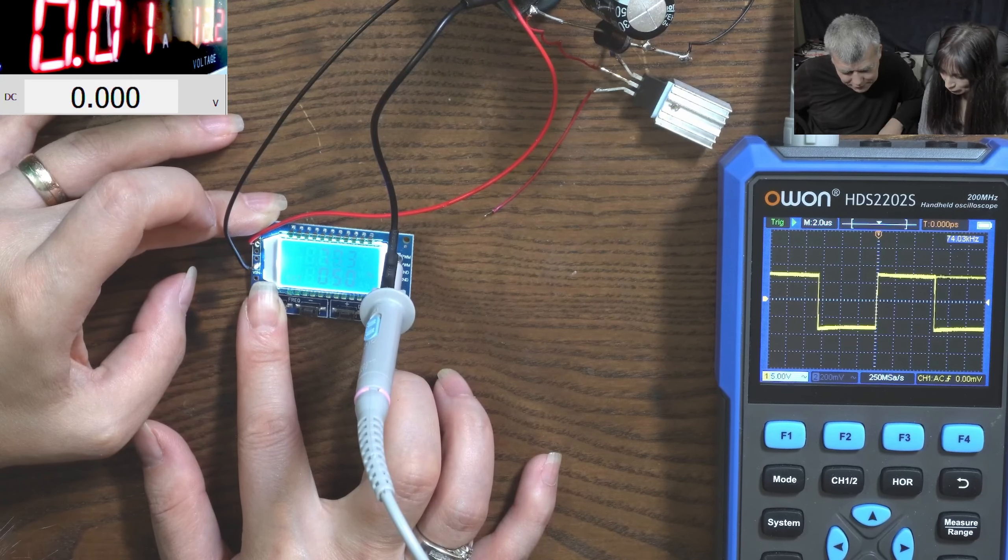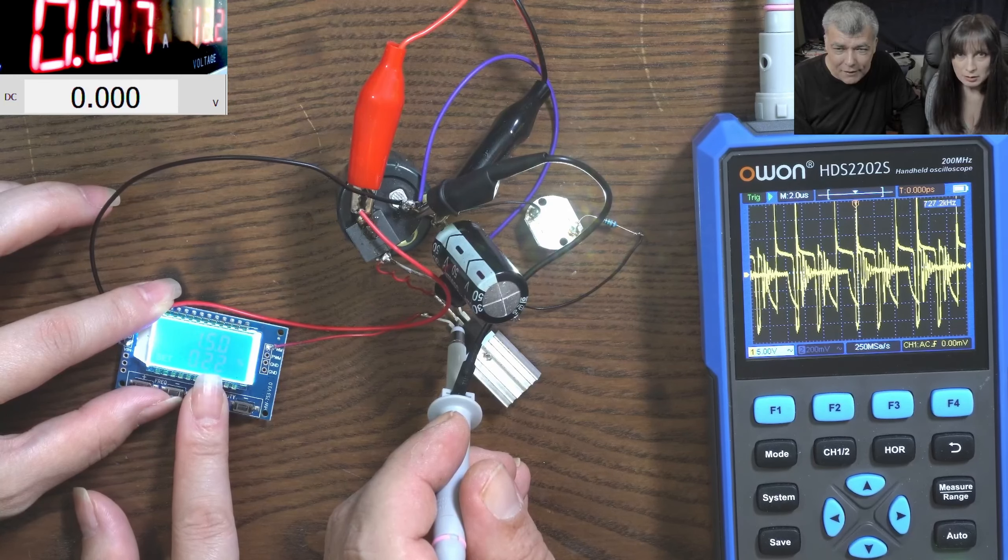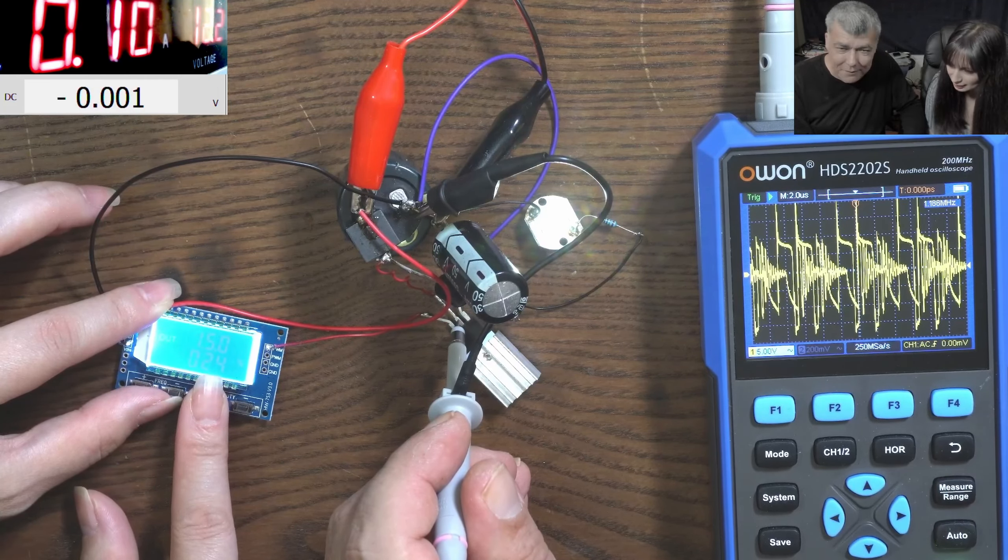Let's connect it to our MOSFET gate. So we connect the PWM generator to the gate of the MOSFET. Now I'm going to check the signal on the drain. Now start adjusting and follow the current. See what is happening with the current.